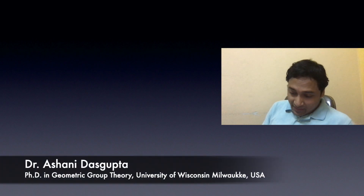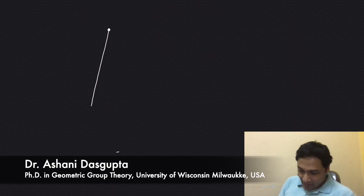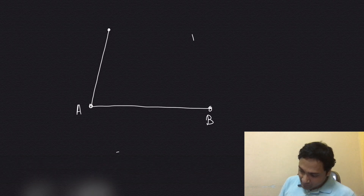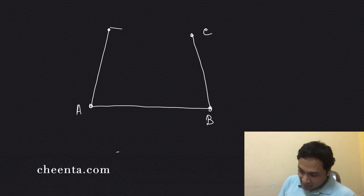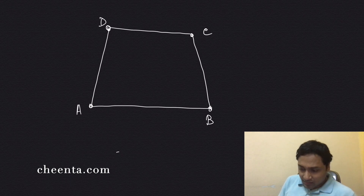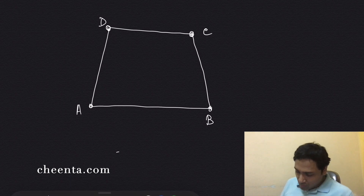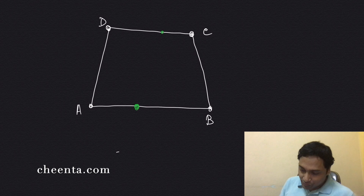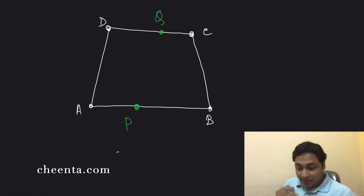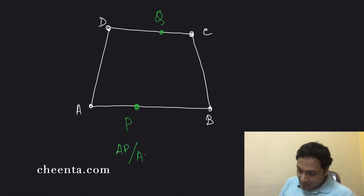This problem starts with a quadrilateral ABCD — not necessarily a parallelogram or square, just a general quadrilateral. We mark two points P and Q: P on AB and Q on CD, such that AP/AB is equal to CQ/CD.